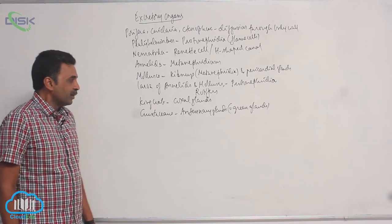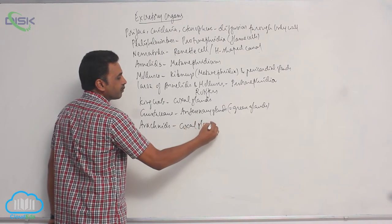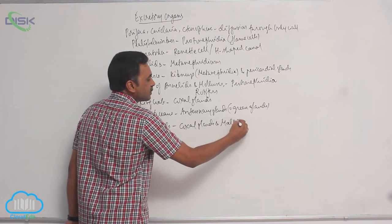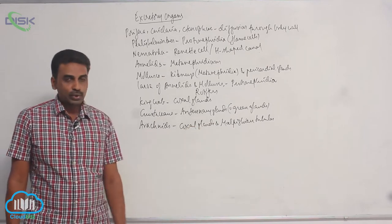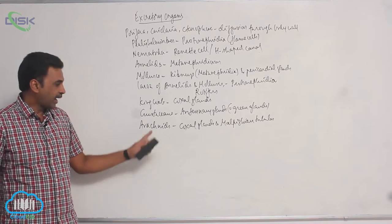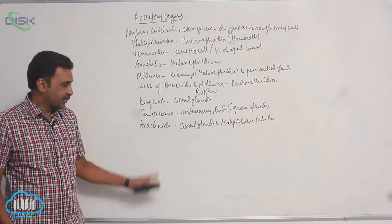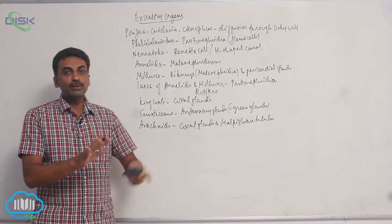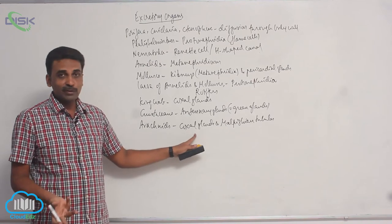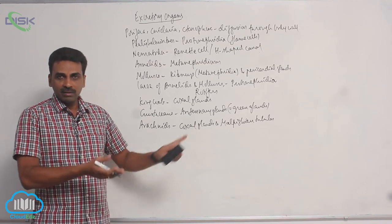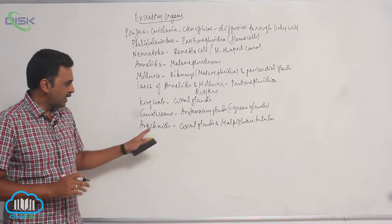In arachnids, there are coxal glands and Malpighian tubules. Arachnids include scorpions, spiders, ticks and mites. In scorpions, we find both. In spiders, primitive forms have coxal glands, and the advanced terrestrial forms generally contain Malpighian tubules. So in arachnids, we find both.